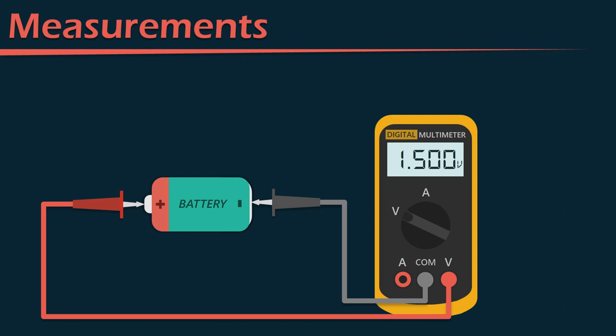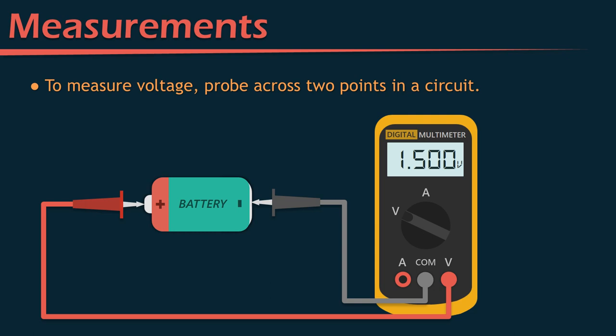If we want to make basic electrical measurements in the lab, we can use something called a multimeter — in this case a digital multimeter, though an analog multimeter with a moving needle works just the same. To measure the voltage of a battery, we plug one test lead into the common jack and the other into the volts jack of the multimeter, make sure the range switch is set to volts, and then probe across the two terminals of the battery. We see that this battery is producing a voltage of 1.5 volts between its two terminals, so this must be a standard alkaline battery that's fully charged.